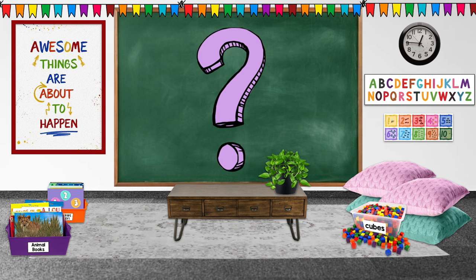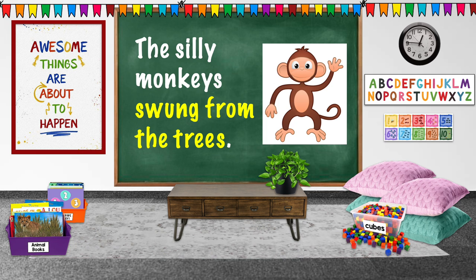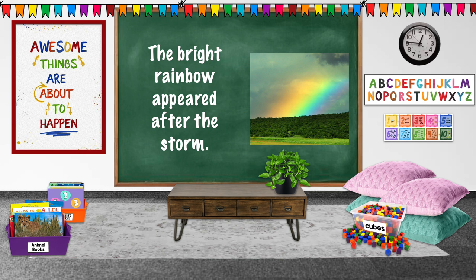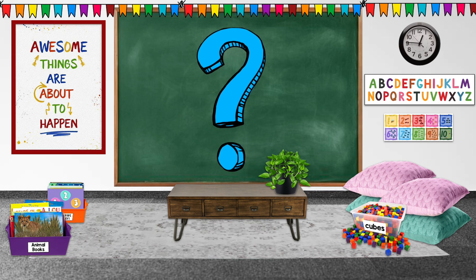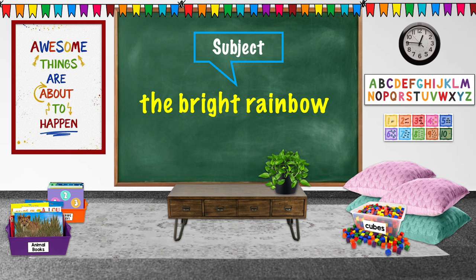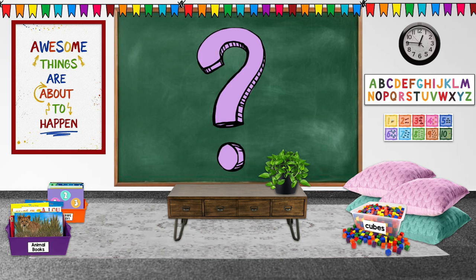They swung from the trees. Swung from the trees is our predicate. And this one: the bright rainbow appeared after the storm. What is this sentence about? The bright rainbow. That's our subject.